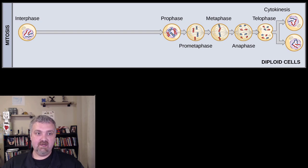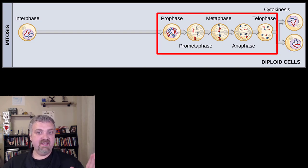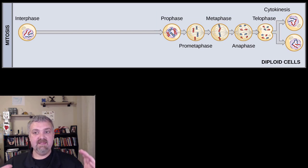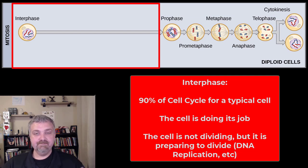So here we see the cell life cycle. First thing I want you to note, this entire thing is not mitosis, mitosis is just there in the middle. They call it PMAT, so we'll come back to that. But the cell life cycle starts with interphase. Interphase is, for the average cell, it's 90% of the cell's time.